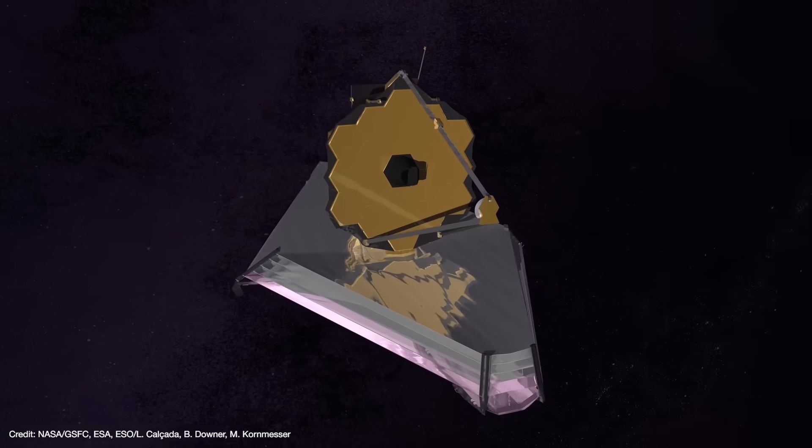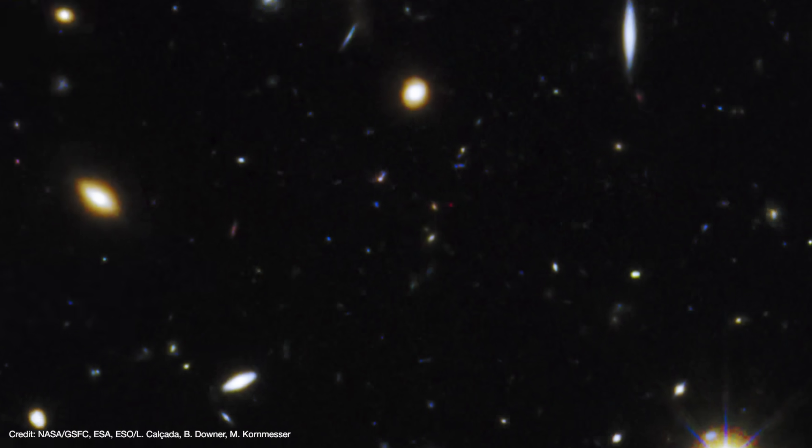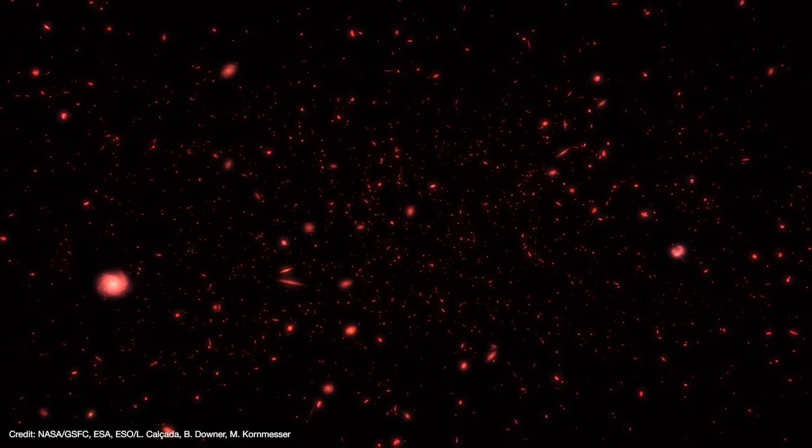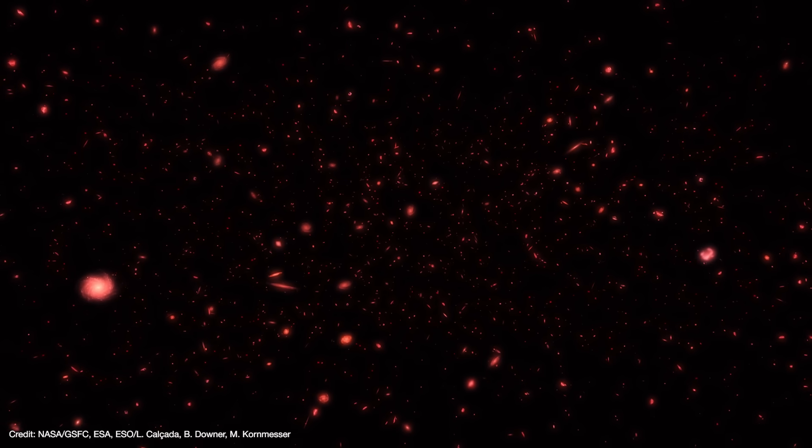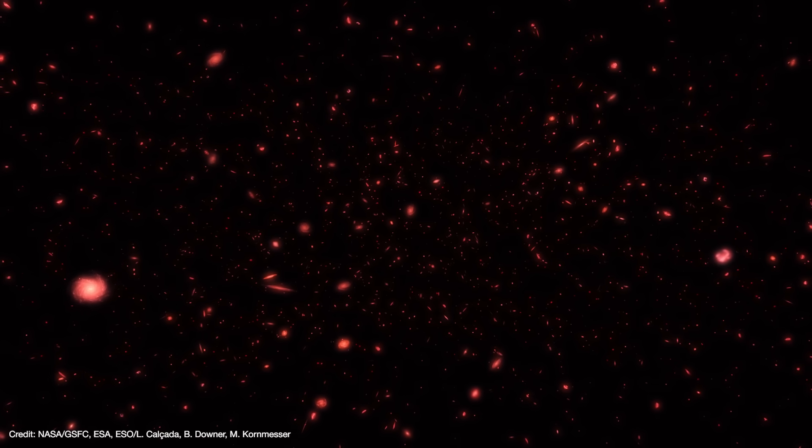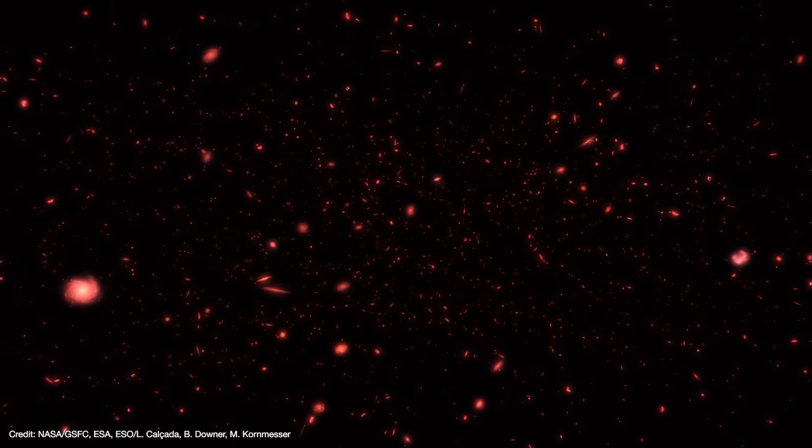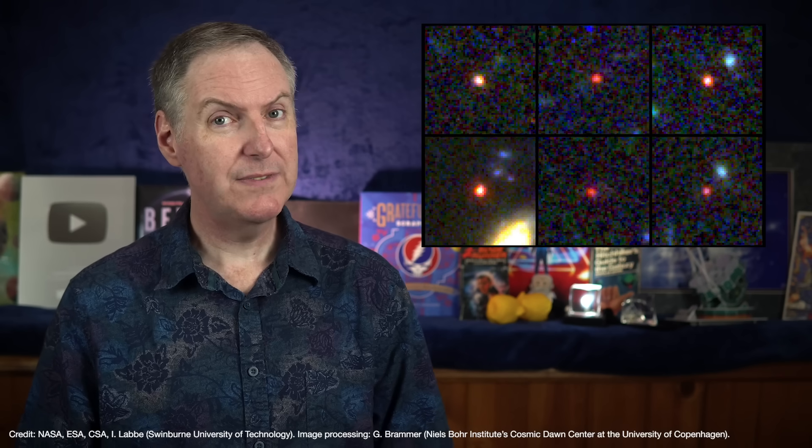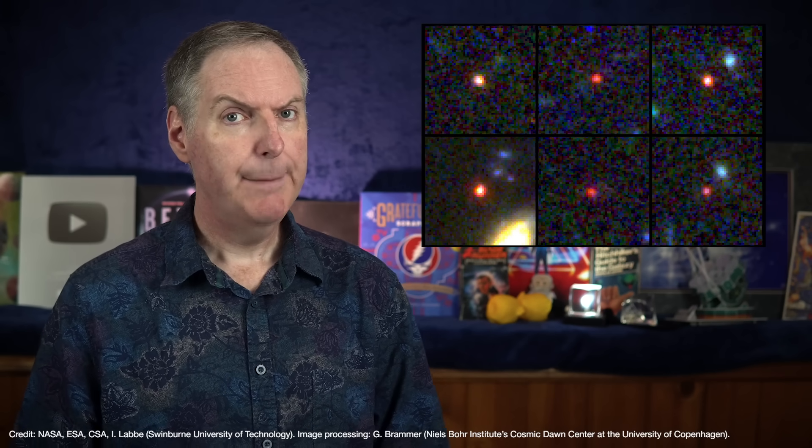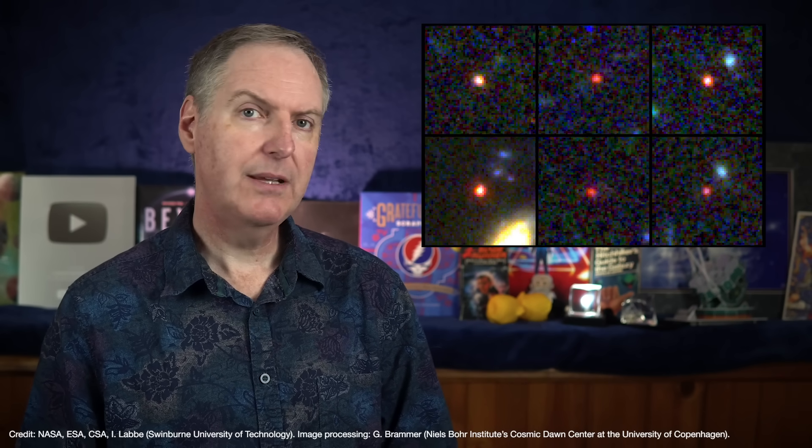That's why there's a JWST program to make ultra-deep images of the universe to tease out the earliest and faintest galaxies. That will give us a much better idea of what the early universe was really like. And then there's the possibility that the reported redshift of these early galaxies may not be very accurate to begin with.